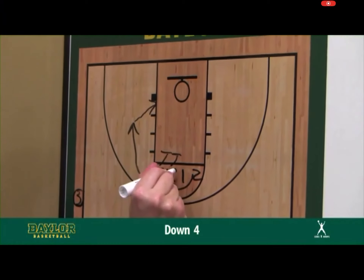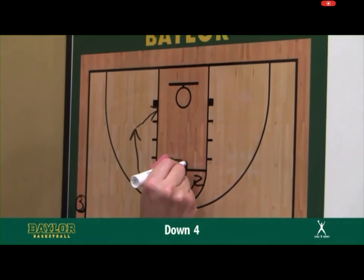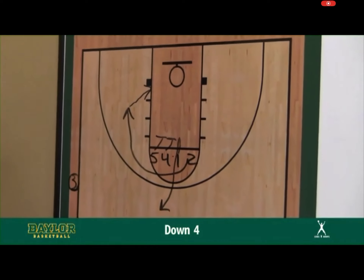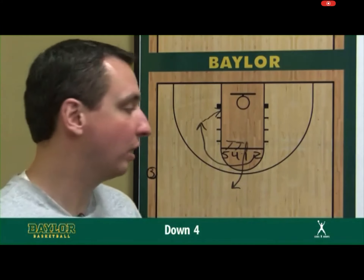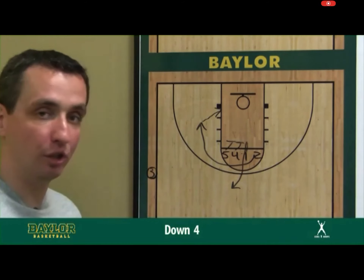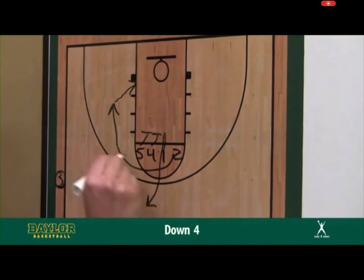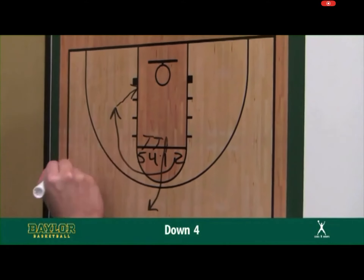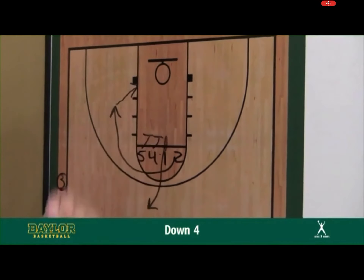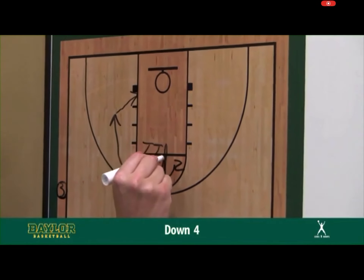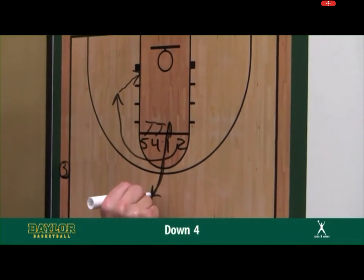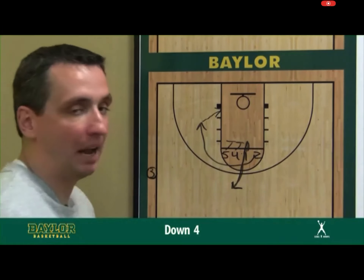Our next option: we have the five and the four pinned down for the one. The one sets up their guy going equal to the screen and now popping back out to the top of the key. We're down four with 30 seconds to play — a two-possession game. We want to take the first good look we can get, whether it's the two brushing off over the top, hitting them in stride to shoot the bank shot or get to the rim, or the one coming off the five and four's double pin down for a top-of-the-key three.